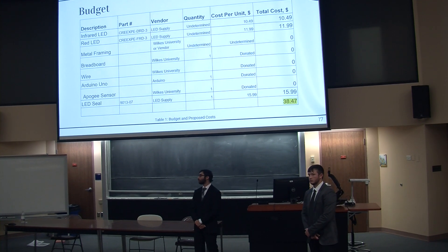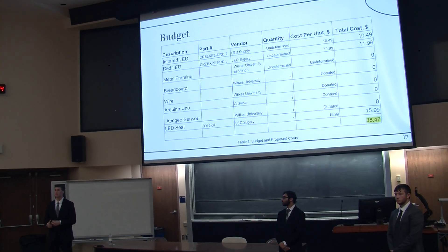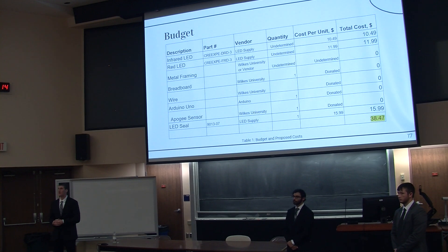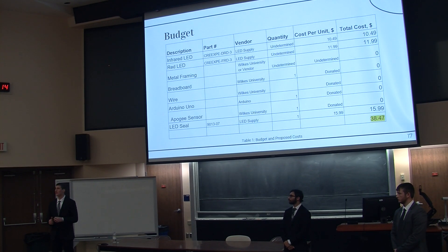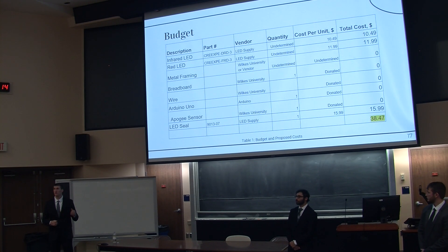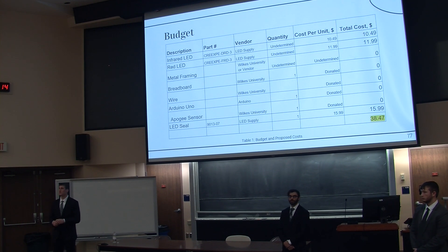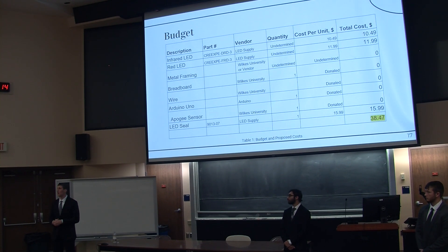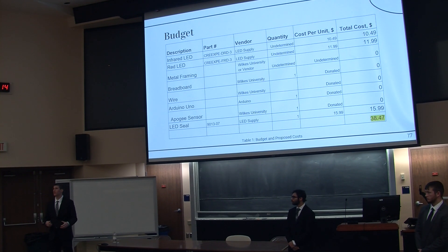Seen here is our table for the proposed budget for the fall and spring semesters. Currently, we have purchased two LEDs — one red and one infrared — to test with and gauge how many we may need to purchase to control the PPFD levels. We've also quoted the LED spread in the lighting that mirrors one of the LEDs within the chamber. This brings our total to around $40, leaving us enough capital to purchase other metals and electronic components going forward.